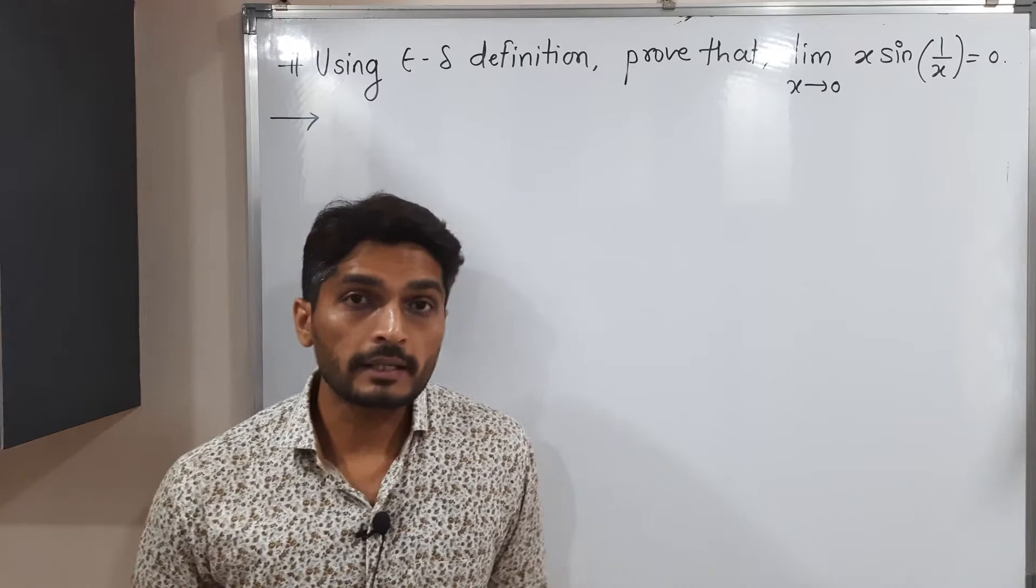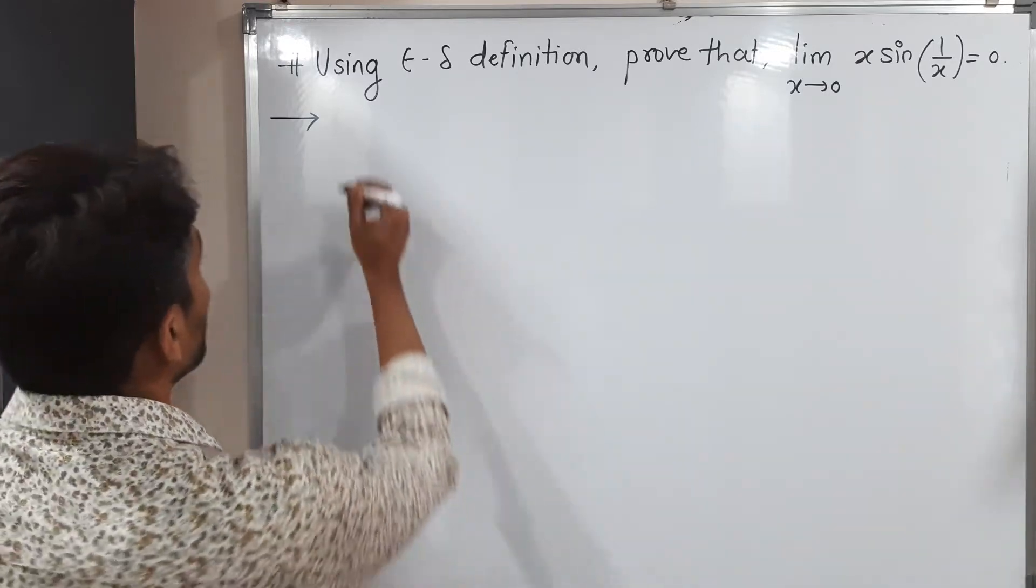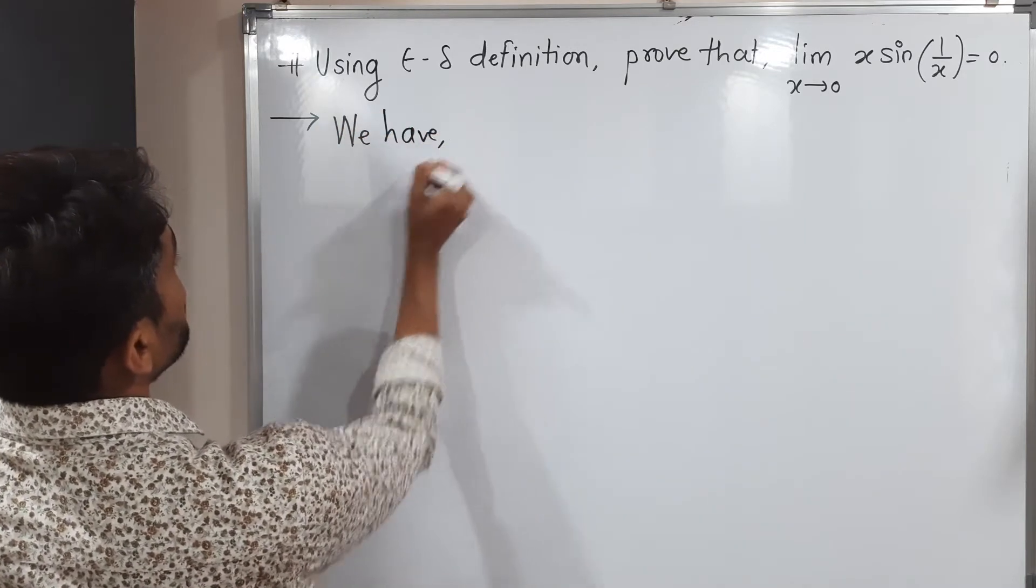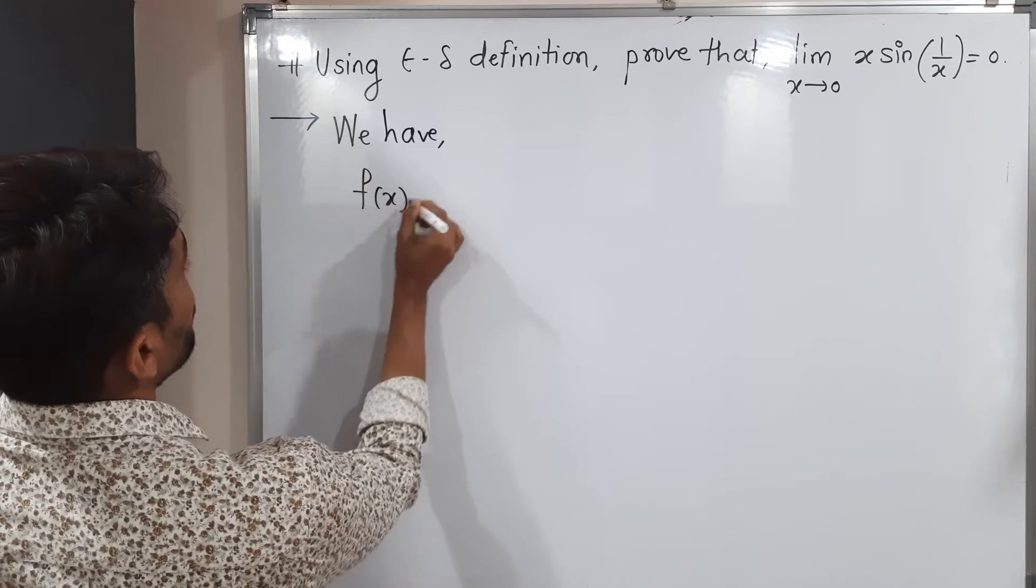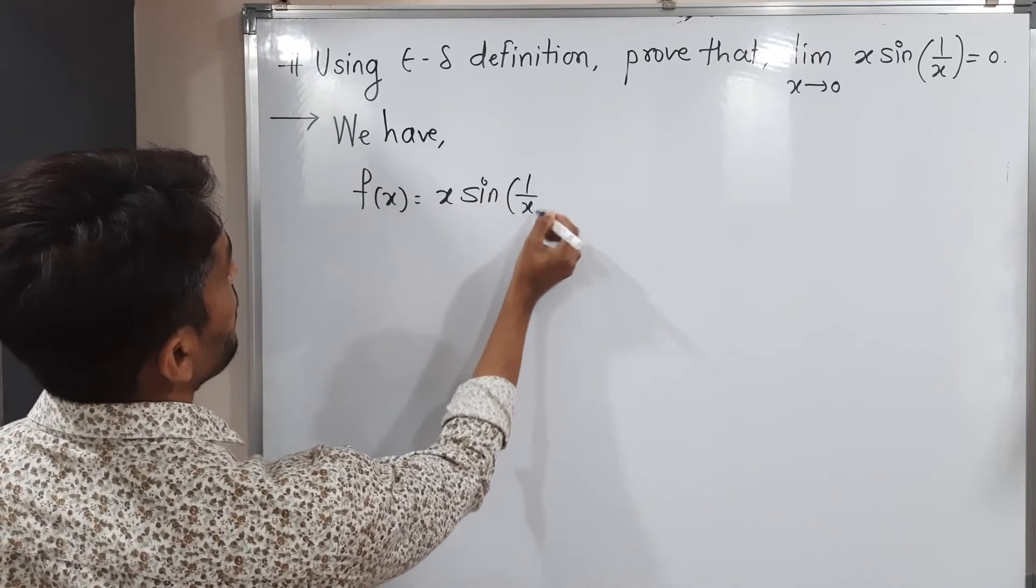So let me write what is our given function. We have, I will write first my f of x. f of x is x sin 1 by x.